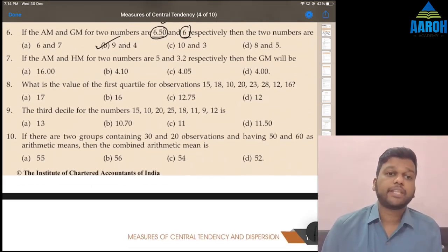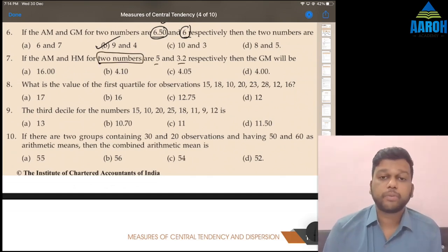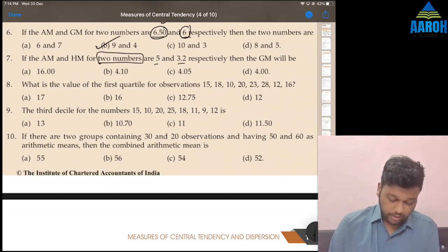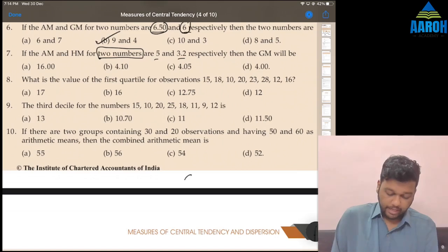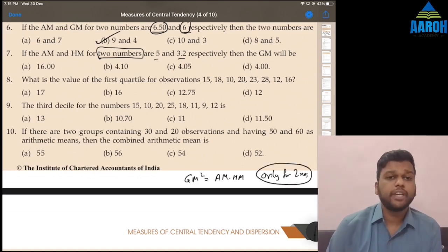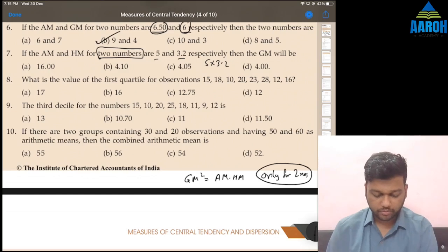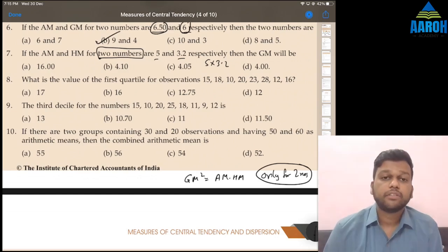If AM and HM for two numbers are 5 and 3.2 respectively, then GM will be what? Now, there is a relationship that GM square is equal to AM into HM. This is only for two numbers. So GM square is going to be 5 into 3.2. What is 5 into 3.2? 16. So GM square is 16, that means GM is 4.